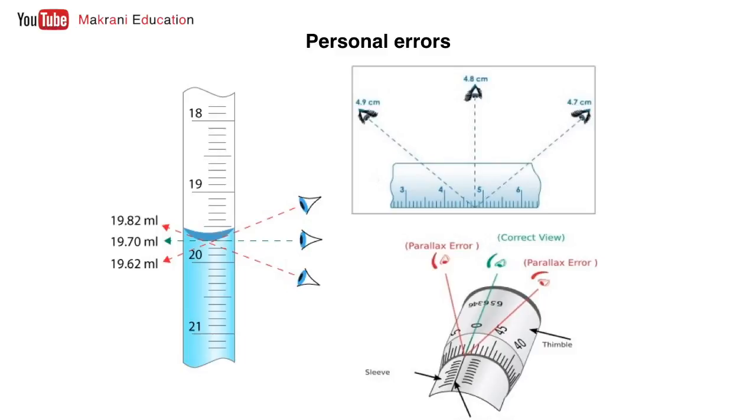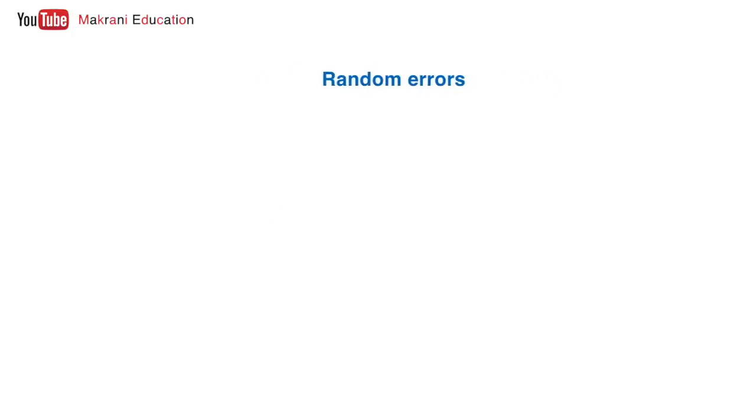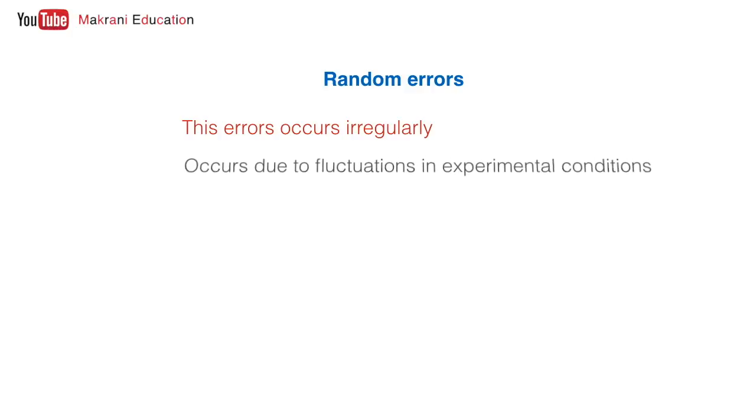Next are random errors. Random error, as the name itself suggests, occurs irregularly. There is no fixed pattern, there is no fixed direction. They can be positive, they can be negative, depending on various conditions and experimental conditions.